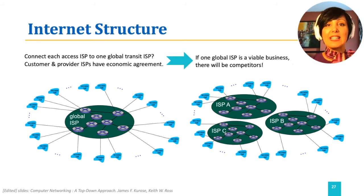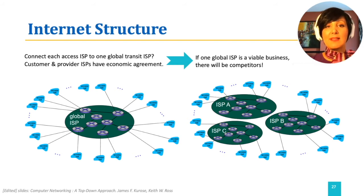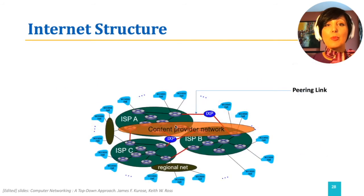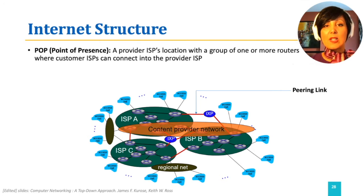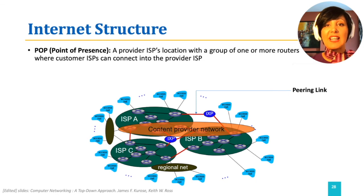In reality, we have Tier 1 ISPs providing the service for access ISPs. The group of one or more routers where the customer ISPs can connect into a provider ISP is called a POP, or Point of Presence. Many ISPs may have impressive networks, but connecting each and every access network might not be possible for all the ISPs providing global transit service.